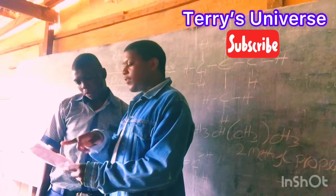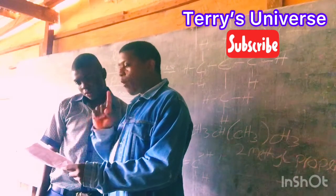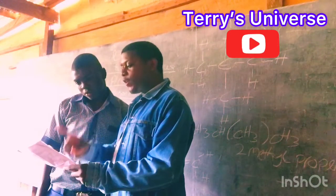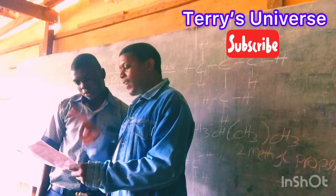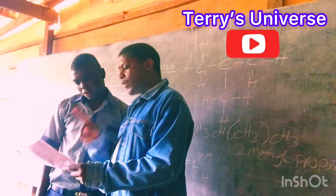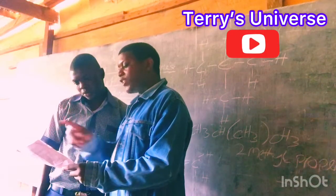A was C2H5OH. B was C4H10. C was CH3COOH. D was C4H8.